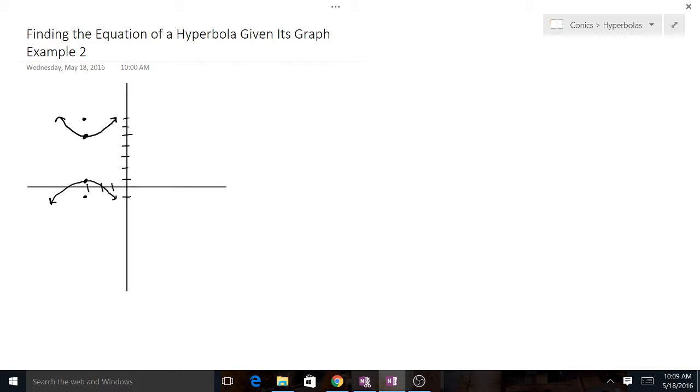So the first thing I would do is figure out what equation we're going to be finding. We see that the hyperbola is opening up and down, so that means that the y squared is going to be first. So it's going to be (y-k)²/a² - (x-h)²/b² = 1. And the reason we know that the y comes first is it's opening up and down. If it was opening left and right, then the x would come first.